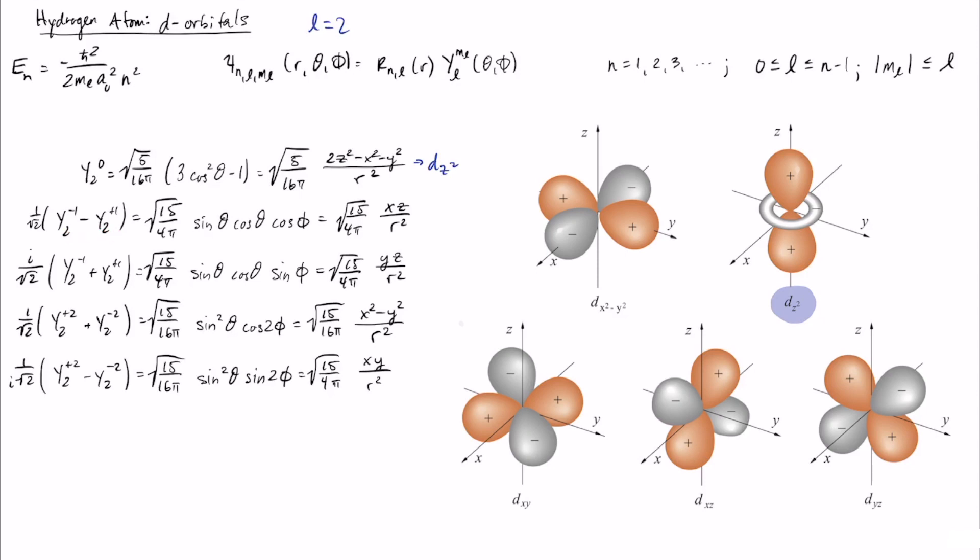Similarly if you take linear combinations of the l equals 2 and then m sub l equals plus and minus 1, then you get that these end up being equal to xz over r squared and yz over r squared. And now for obvious reasons these get called the dxz and the dyz, and the corresponding polar plots are shown down here.